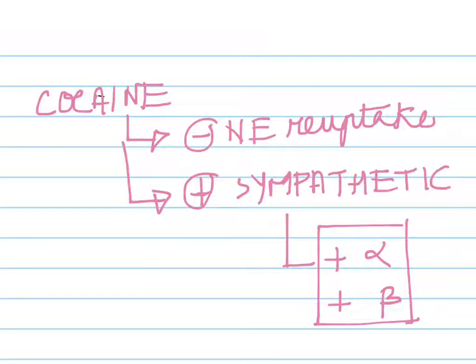So how does cocaine cause vasoconstriction in the chest, leading to chest pain and acute myocardial infarction? What it does is it inhibits the norepinephrine reuptake back into the synapses, so all of the norepinephrine gets accumulated in the synapses, and thus you get a sympathetic response, stimulating both your alpha and beta-adrenergic receptors.